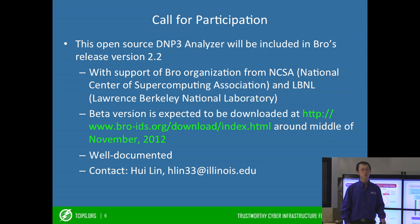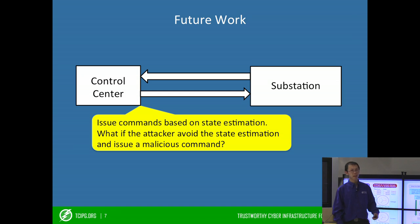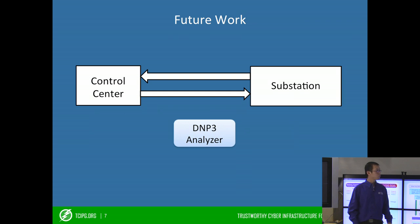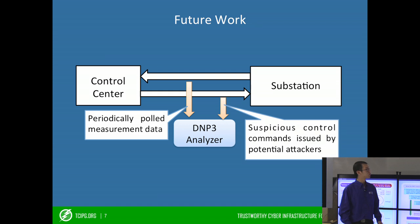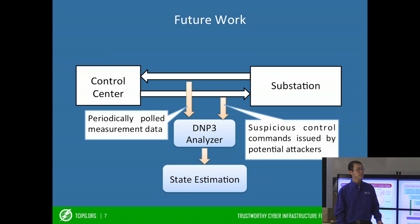If you have any questions or comments, please feel free to communicate with me. In the last slide, we will describe our future work. Based on our observation, the control center usually issues commands based on state estimation. But what if the attacker bypasses the state estimation and issues a malicious command? In order to detect that, we propose to include in the DNP3 analyzer the periodically polled measurement data found on the network, as well as the suspicious control commands issued by potential attacks. We include these two pieces of information into the state estimation so we can predict the effect of the control command.